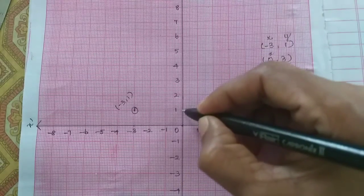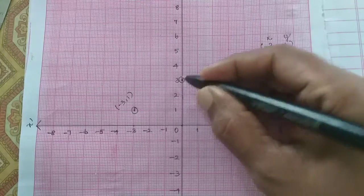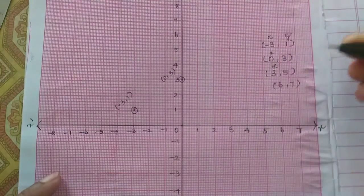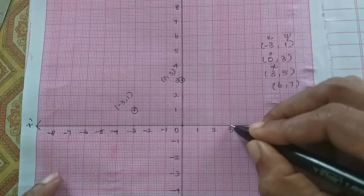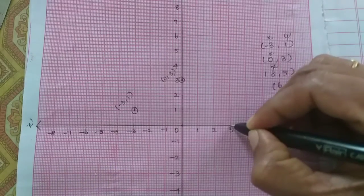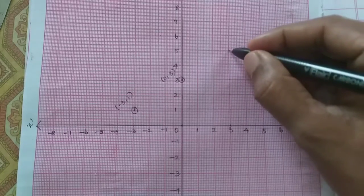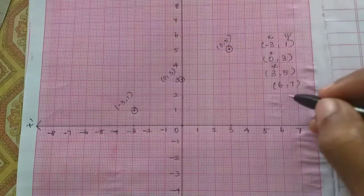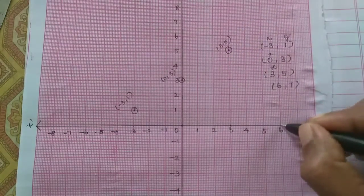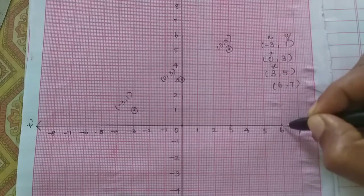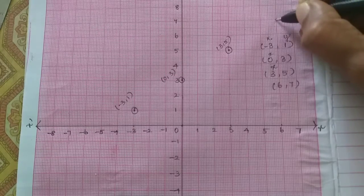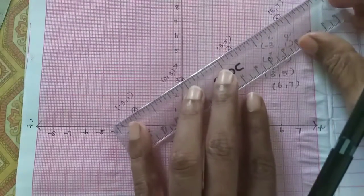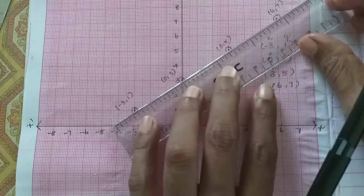X-axis 3, 5. X-axis 3 here, top is plus 5 on y-axis above the top, 1, 2, 3, 4, 5. This is 3, 5. Next 6, 7. X-axis 6 here, plus 7 on y-axis. So here is the point we will join. We need a straight line.